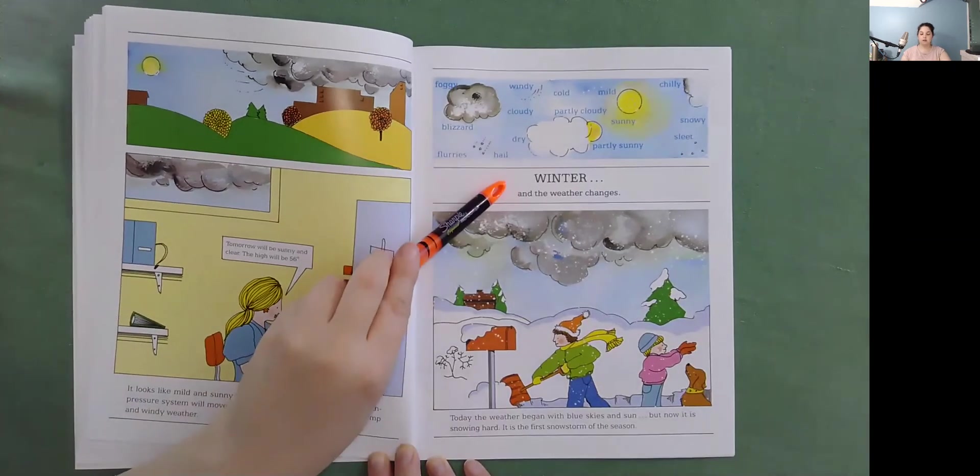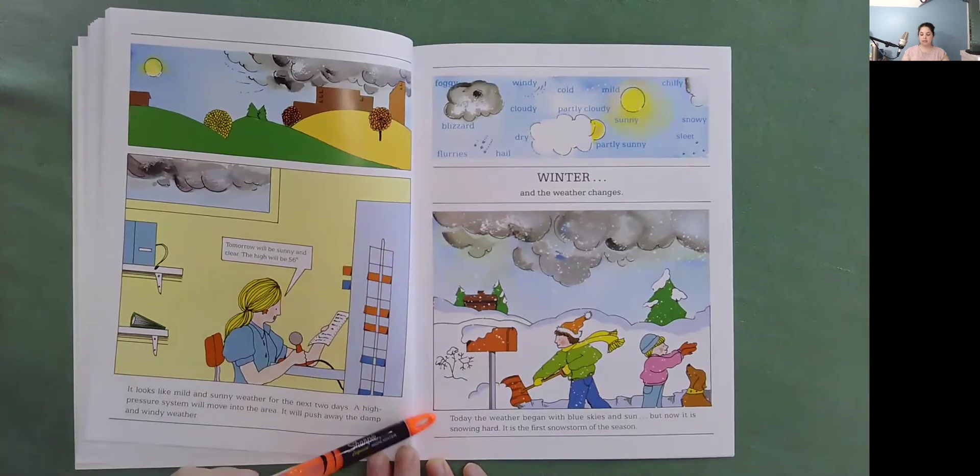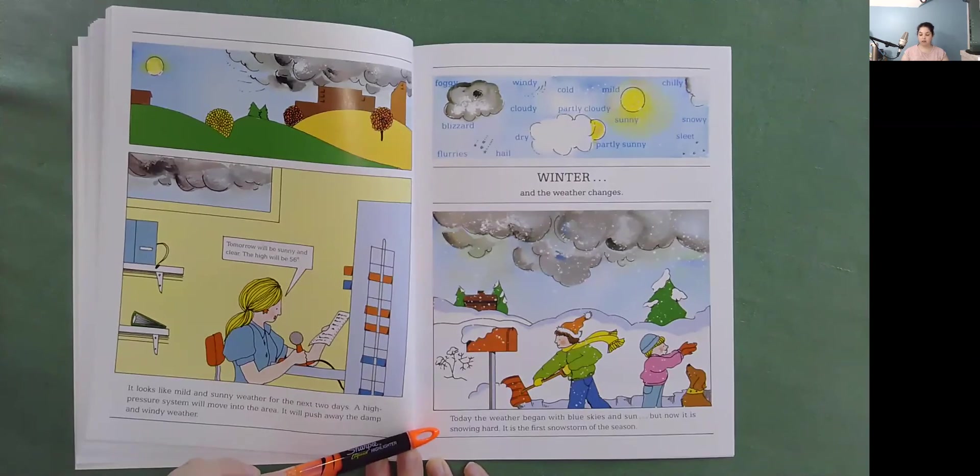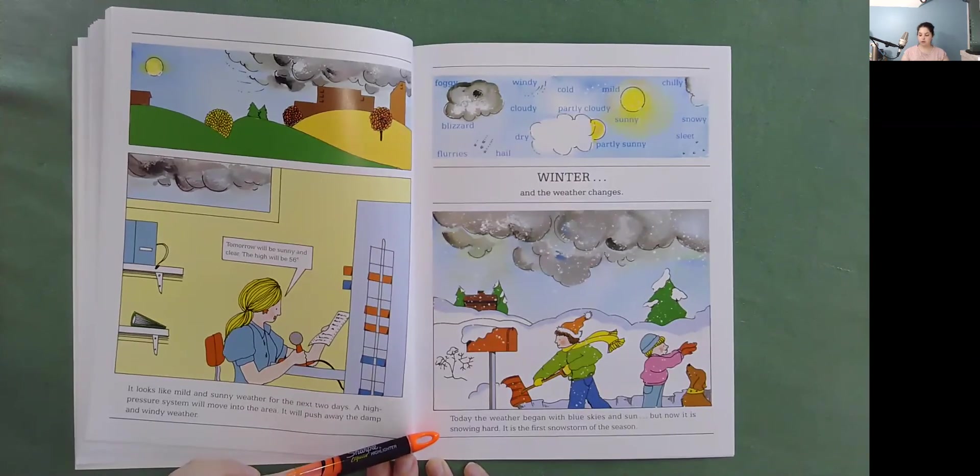Winter and the weather changes. Today, the weather began with blue skies and sun. But now it is snowing hard. It is the first snow storm of the season.